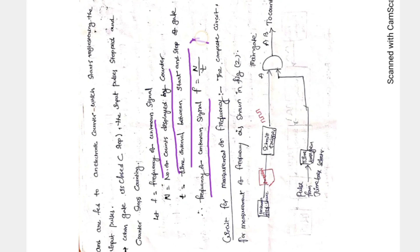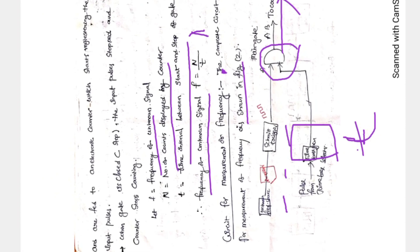In the circuit for measuring frequency, the components are: unknown voltage input, amplifier, Schmitt trigger, main gate (start and stop gate), counter, and a time base selector. The time base selector allows us to select the time period — how long we count the pulses. Based on the number of pulses passed to the counter in that selected time, the frequency is determined. The signal is converted into a train of pulses using the Schmitt trigger, then fed to the counter via the start and stop gate.